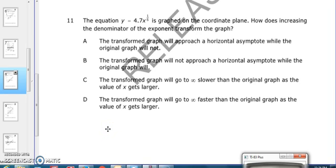The 2014 North Carolina AFM released test, question number 11. The equation y equals 4.7x to the 1/6th is graphed on the coordinate plane. How does increasing the denominator of the exponent transform the graph? The exponent being the 1/6th, the denominator being the 6.